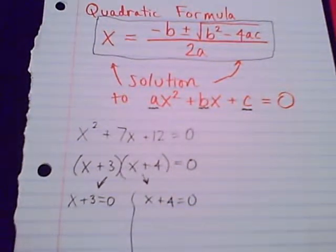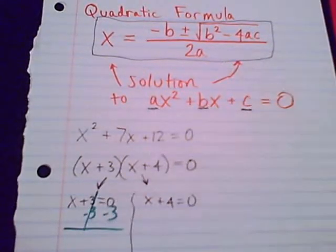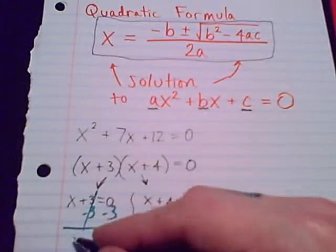x plus 3 equals zero or x plus 4 equals zero. And we will solve these linear equations. On the left equation, x plus 3 equals zero, minus 3, minus 3, cancel. There's our x equals negative 3.